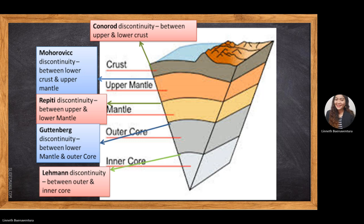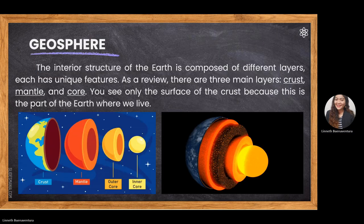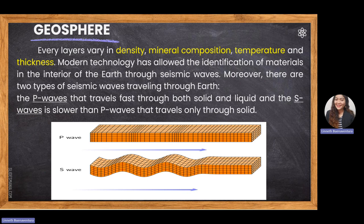Those are the more detailed layers of Earth. The three major ones are crust, mantle, and core. The crust is the thin layer, the mantle is the thickest, and the core is said to be the center of the Earth. This page of our PowerPoint depicts these three layers.